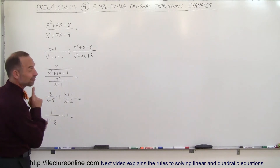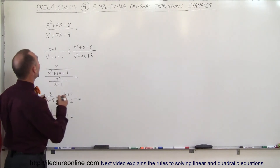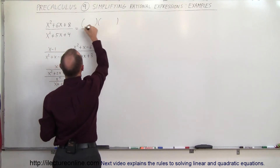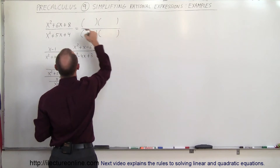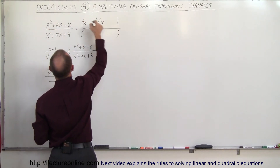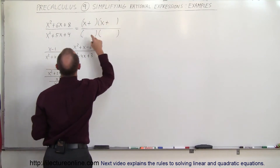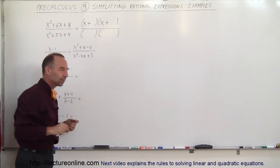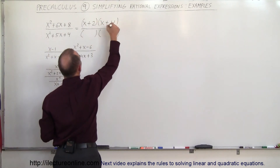Notice that we probably need to factor first before we can simplify. The numerator can probably be factored and the denominator is probably factorable too. So we have an x squared here, that means we need an x and an x. Everything is positive — a plus and a plus. I'm looking for two numbers: when I multiply I get 8, when I add I get 6. That's 2 plus 4, so we need a 2 and a 4.